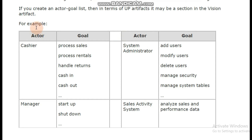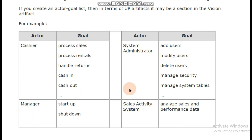In the actor-goal list you will have a column of actors and a column of goals — the same structure is used here. They have a table where you identify the actor and the goal.